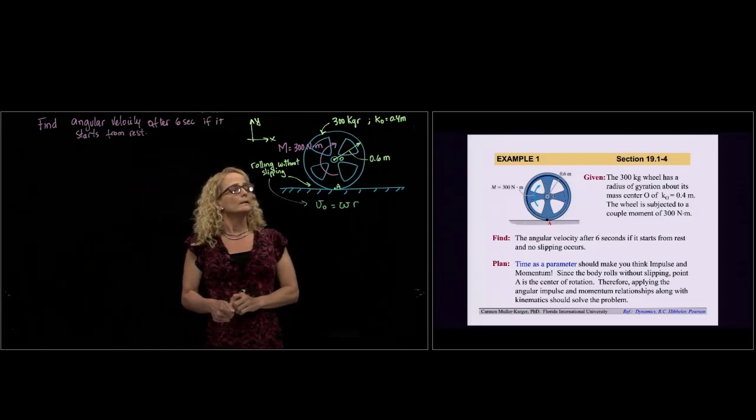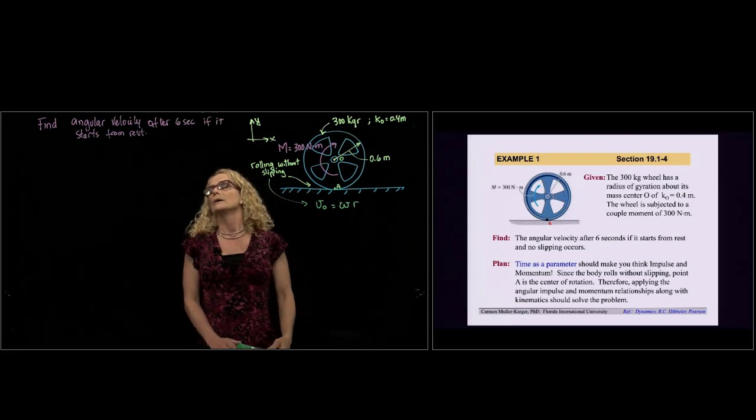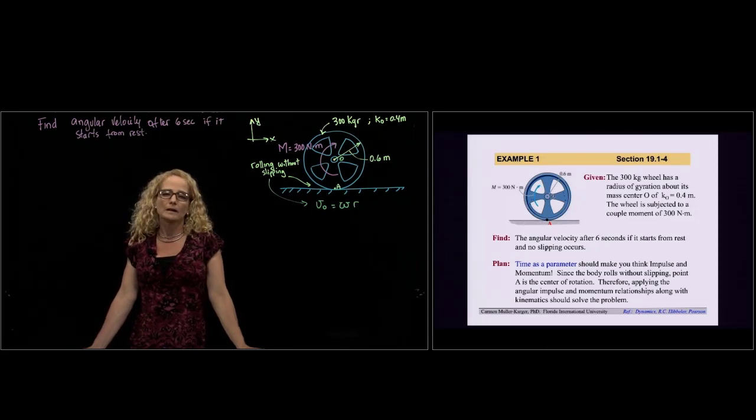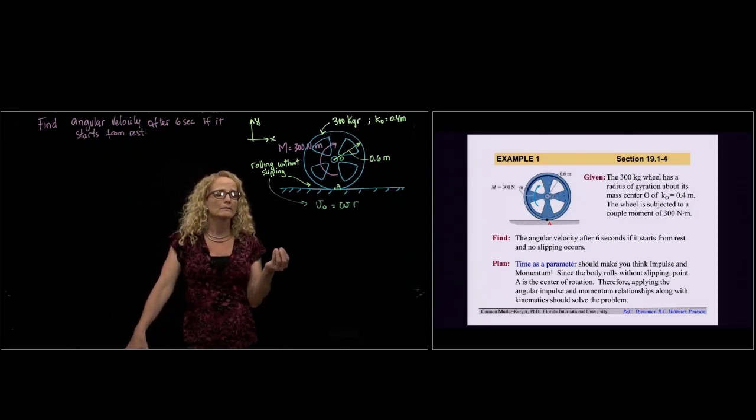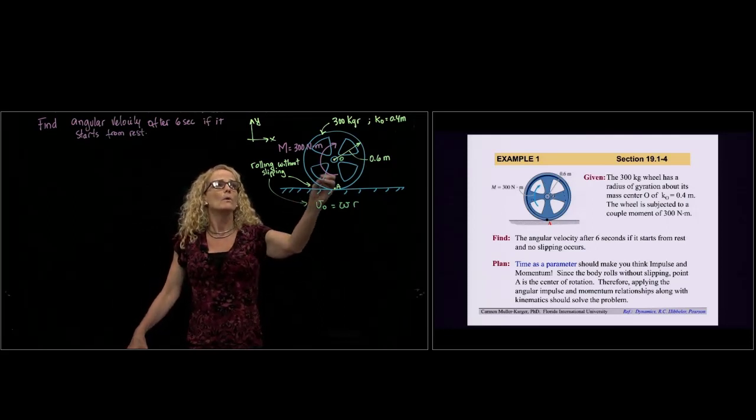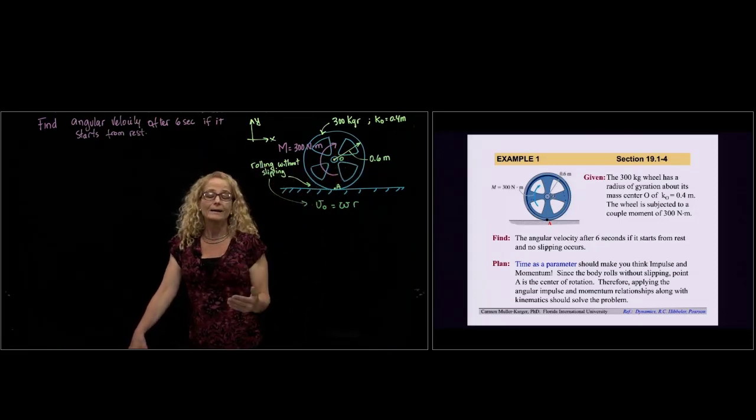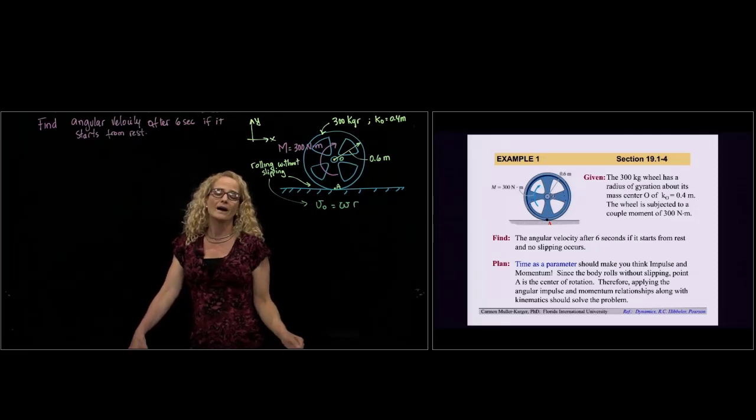The wheel is subjected to a moment which is 300 Newton meters, and we are being asked to find the angular velocity after six seconds if it starts from rest. It's very important to analyze what we are being asked to know what equation we will be using. Since we are being asked to relate moment, forces, and time, the best approach is to use the principle of angular momentum.